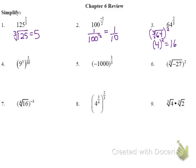For number 4, we have 9 to the 5th, to the 1/10. Since it's an exponent to an exponent, we can multiply the two, giving us 9 to the 5/10, which simplifies to 9 to the 1/2, which is the square root of 9. Our answer is 3.